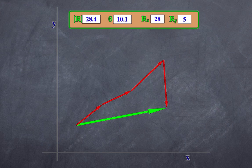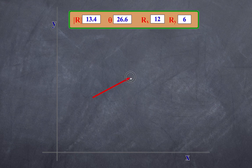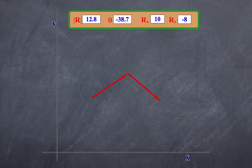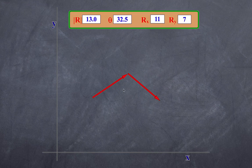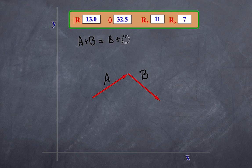Now let's clear all these vectors and deal with two vectors. I'm going to add a new vector here, and as I play with it you can see the value and the angle of the vector given. Here's my second vector. So now I have done vector A plus vector B, and as I told you, it doesn't matter which order they are in.